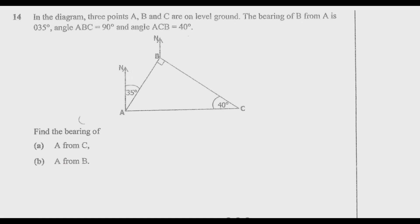Let us look at question 14. In the diagram, three points A, B, and C are on level ground. The bearing of B from A is 035 degrees, angle ABC equals 90 degrees, and angle ACB equals 40 degrees. Find the bearing of A from C.